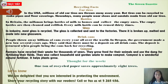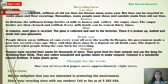The deposit is returned when people bring the cans back for recycling. Compost: Farmers have recycled their waste for thousands of years. They grow food for their animals and use the dung for fertilizing their fields. They also collect household and garden waste to make compost. Compost is a wonderful natural fertilizer — it helps plants grow. Thought for the week: One ton of recycled paper saves approximately eight trees. Share your recycling story with our readers — call or fax us at 5265-456.